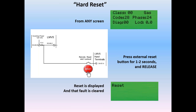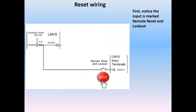Let's take a closer look at that reset circuit. Reset wiring: notice that the input is marked remote reset and lockout, because that's exactly what the function of that input is. If you are in a lockout and you push this button, you take line voltage and you present it to X401.1, and this causes the LMV to do a reset. However, once the fault is removed, if you apply power to this terminal again, you will in fact cause a manual lockout. This has caused a lot of confusion with customers.